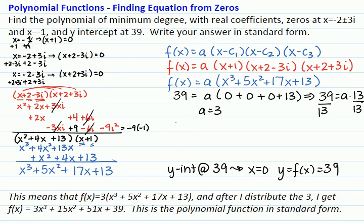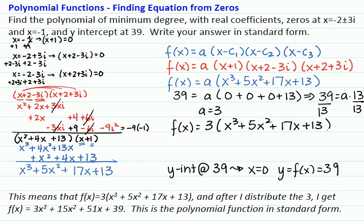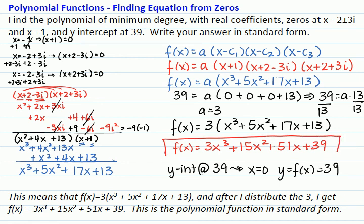Which now means that f of x is equal to 3 times x cubed plus 5x squared plus 17x plus 13. And if I distribute the 3, f of x is equal to 3x cubed plus 15x squared plus 51x plus 39. And this is the standard form of the polynomial function given its zeros.